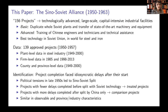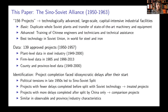We collected data on the projects that were approved under the Sino-Soviet alliance. The projects that were eventually approved and signed were 139. We matched these projects with the performance of the plants built under them. We have yearly data for plants in the steel industry between 1949 and 2000, and firm-level data in 1985 and between 1998 and 2013 in all other industries.